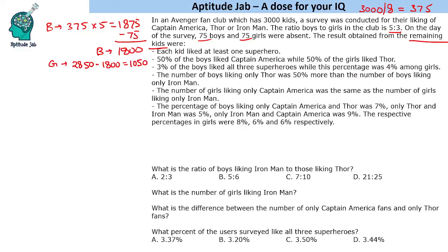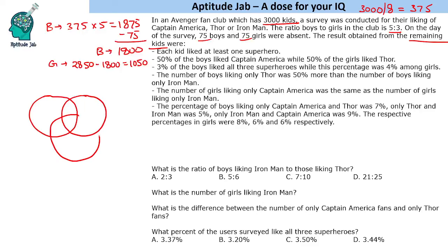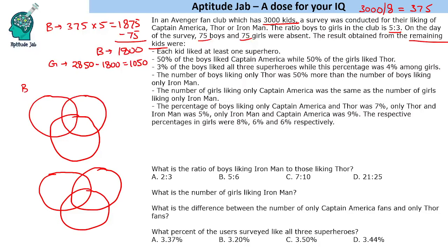We will create Venn diagrams separately because some data is given about two genders — boys and girls — and each kid likes at least one superhero, so the outside region is zero. We'll make double Venn diagrams: one for boys and one for girls, about the remaining surveyed boys and girls.